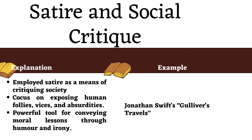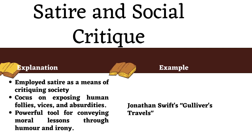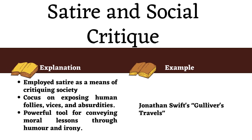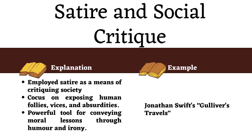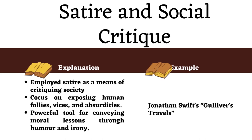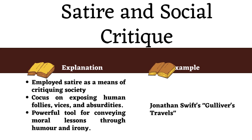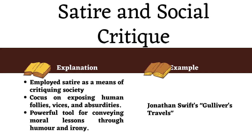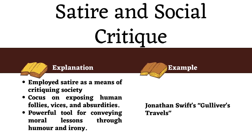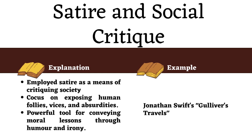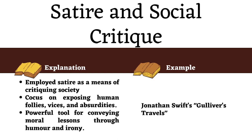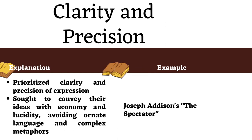Satire and social critique: satire emerges as a powerful tool for neoclassical writers to critique society. They employed satire as a means of critiquing society, often with a focus on exposing human follies, vices, and absurdities. Satire was a powerful tool for conveying moral lessons through humor and irony. Jonathan Swift's Gulliver's Travels stands as a masterful example, using satire to expose human follies, vices, and absurdities with wit and irony. It criticizes various aspects of human society, such as politics, science, and human nature, revealing the flaws and inconsistencies in each.